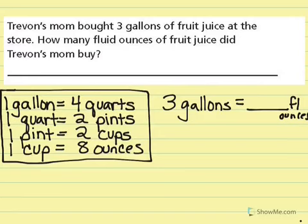So if each cup is 8 ounces and I have 2 cups, that's 16 ounces in a pint. Then I have 2 pints, so that would be double, which is 32 ounces.